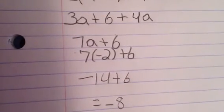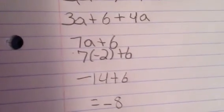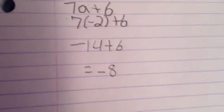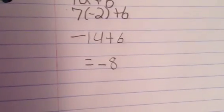When you plug in the negative 2, you will have 7 times negative 2 plus 6. This gives you negative 14 plus 6, which also gives you negative 8.